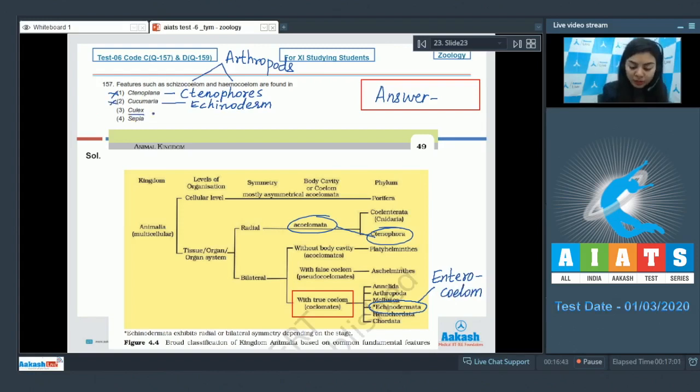Option 3, Culex. Culex belongs to the class Insecta of phylum Arthropoda. This is correct. Schizocoel and hemocoel are found in Culex. So this is the right answer. Option 4, Sepia. Sepia is a mollusk, and mollusks also show enterocoel type of true coelom. So the right answer here is option number 3, Culex.